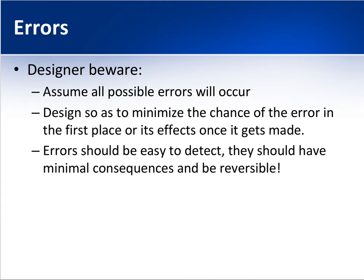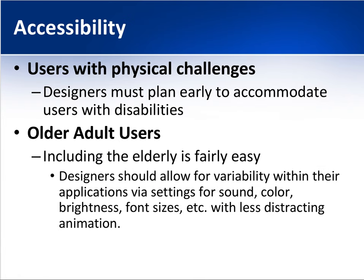Assume all possible errors will occur, because they will. We want to minimize the chance of error in the first place, and when errors do happen, they should be reversible — not catastrophic. For example, on your computer, if you make a mistake, you should be able to undo and backtrack. We also want to keep accessibility in mind throughout the semester — we're designing for all users, including older users and users with disabilities, creating designs that accommodate everyone.